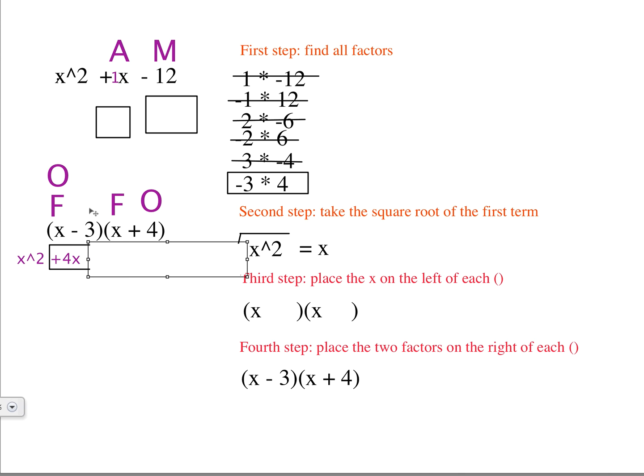And then you're going to multiply the two inners, which is negative 3 times x. And negative 3 times x gives you a negative 3x. And then you multiply the two last ones, which are negative 3 and positive 4. Negative 3 times positive 4 is a negative 12.